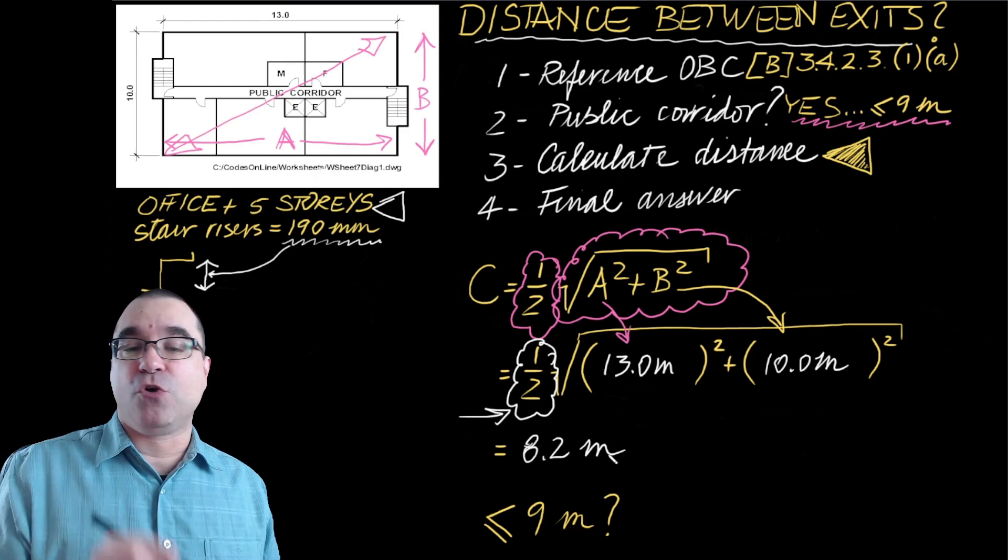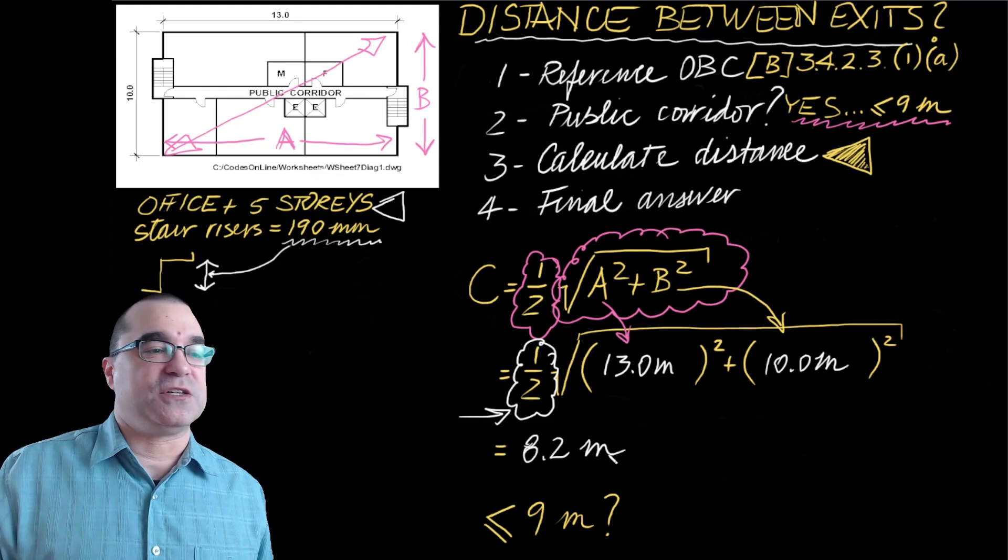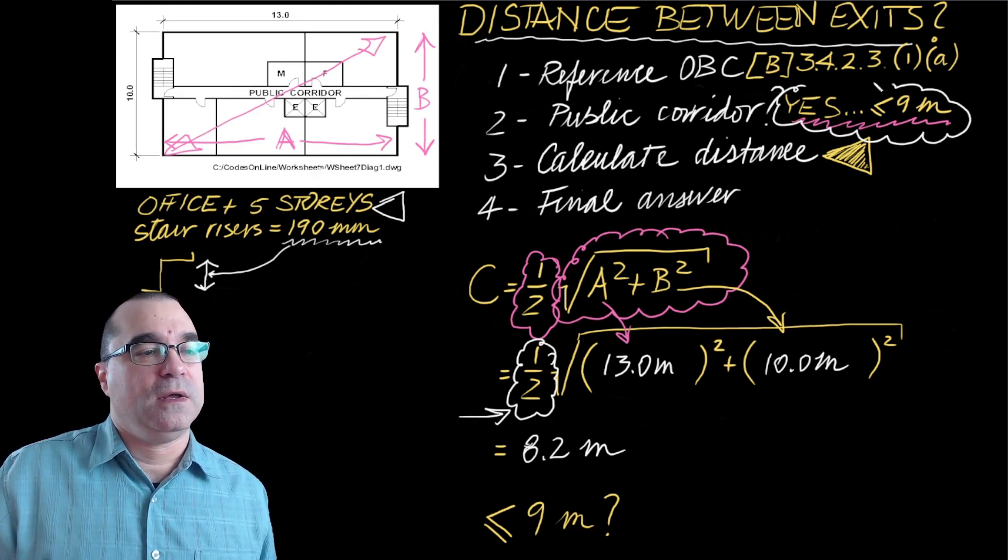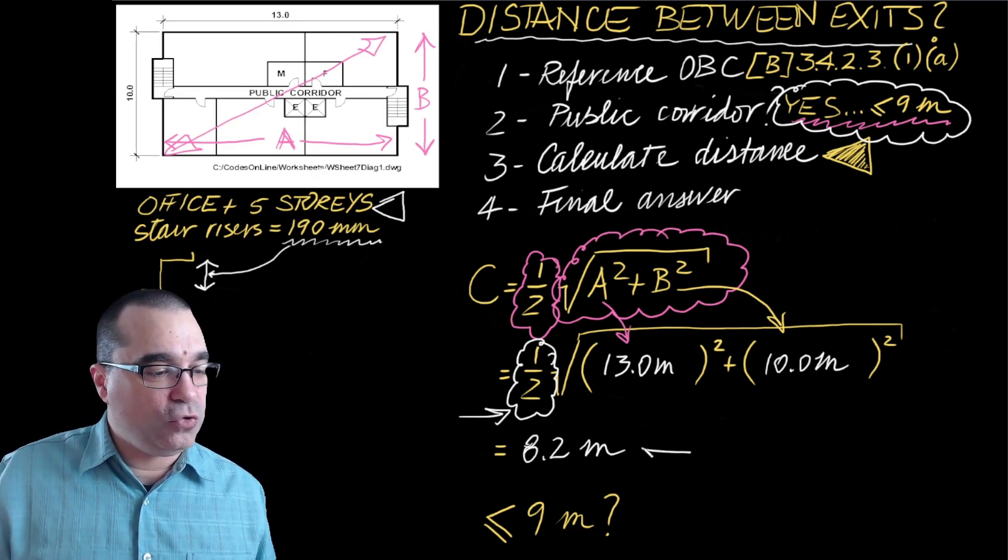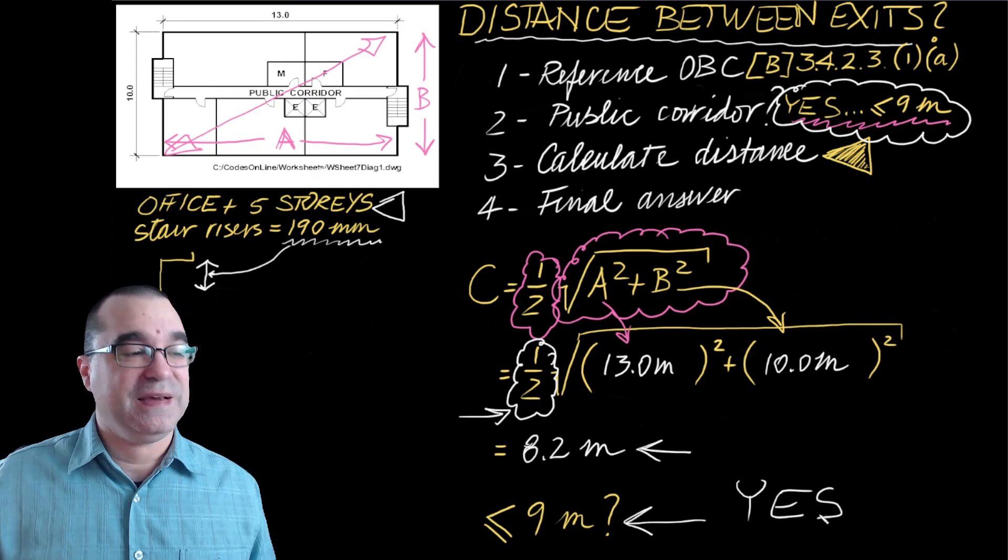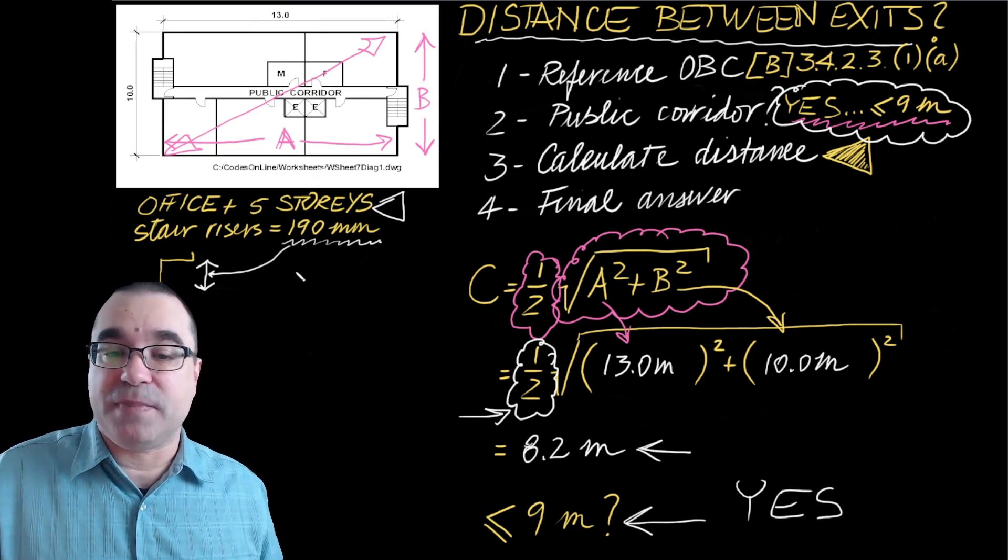Finally, before we move on to step number four, we have to ask ourselves: is the condition of this public corridor being met? Is this 8.2 meters no more than nine meters? The answer is yes, 8.2 meters is correct. So now we have all the information we need to move on to step number four.